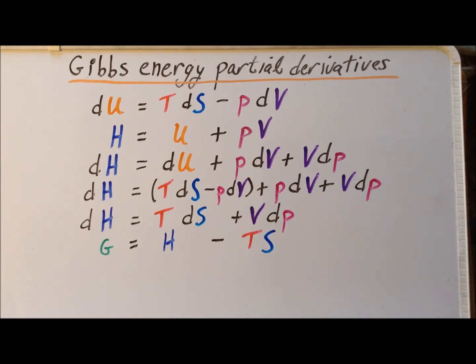Then we recall the definition of the Gibbs energy G, which is equal to H minus TS, where H is the enthalpy, T is the thermodynamic temperature, and S is the entropy.